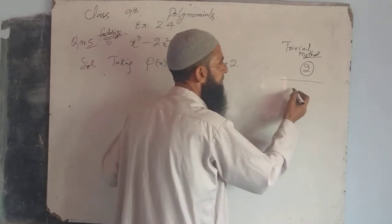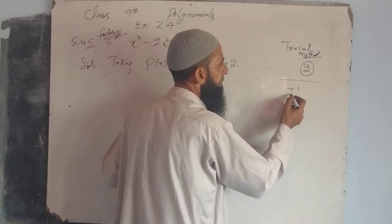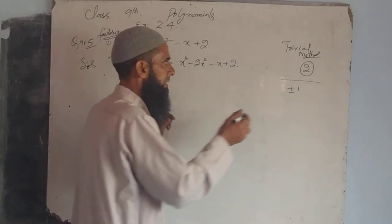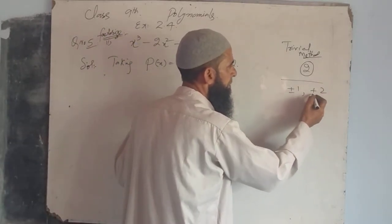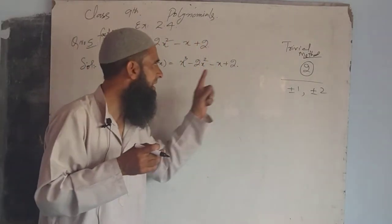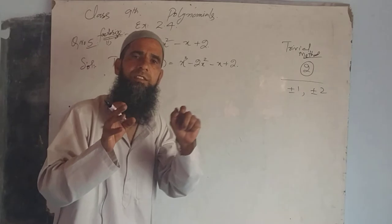Clearly we have here plus one, minus one. These are also its factors. Next is plus two, minus two. These are its four factors of the constant term.